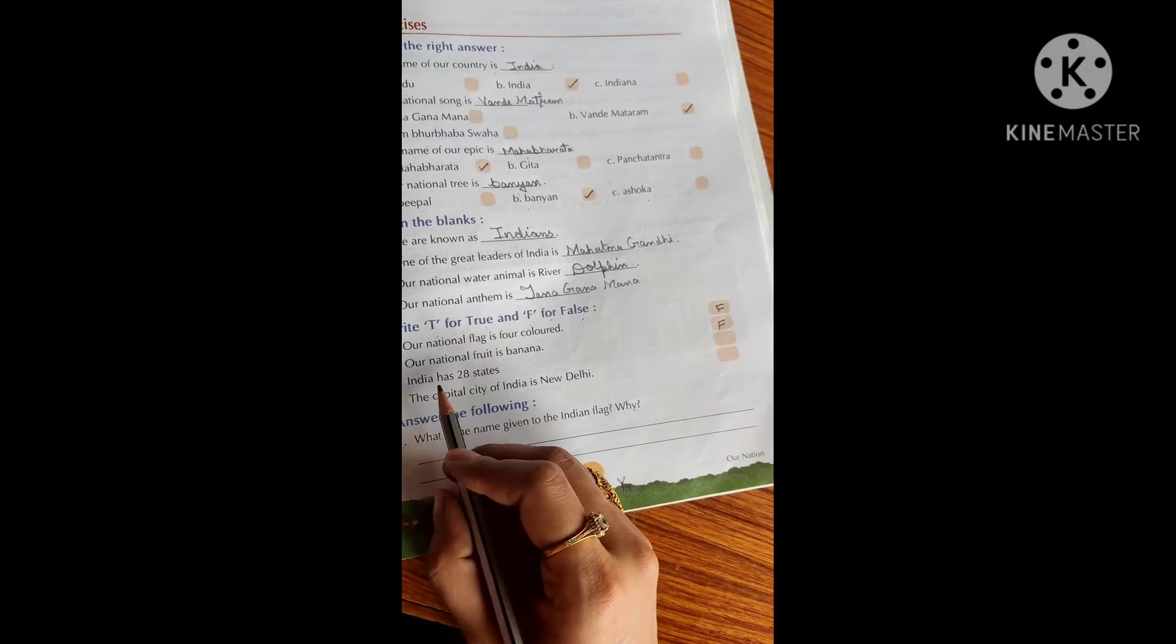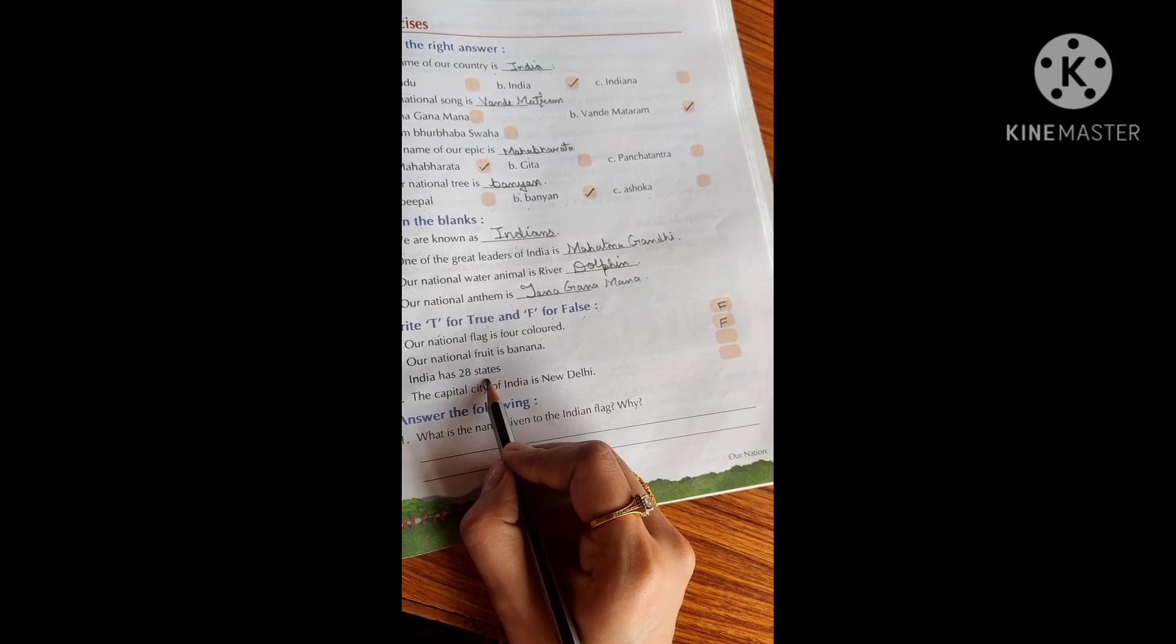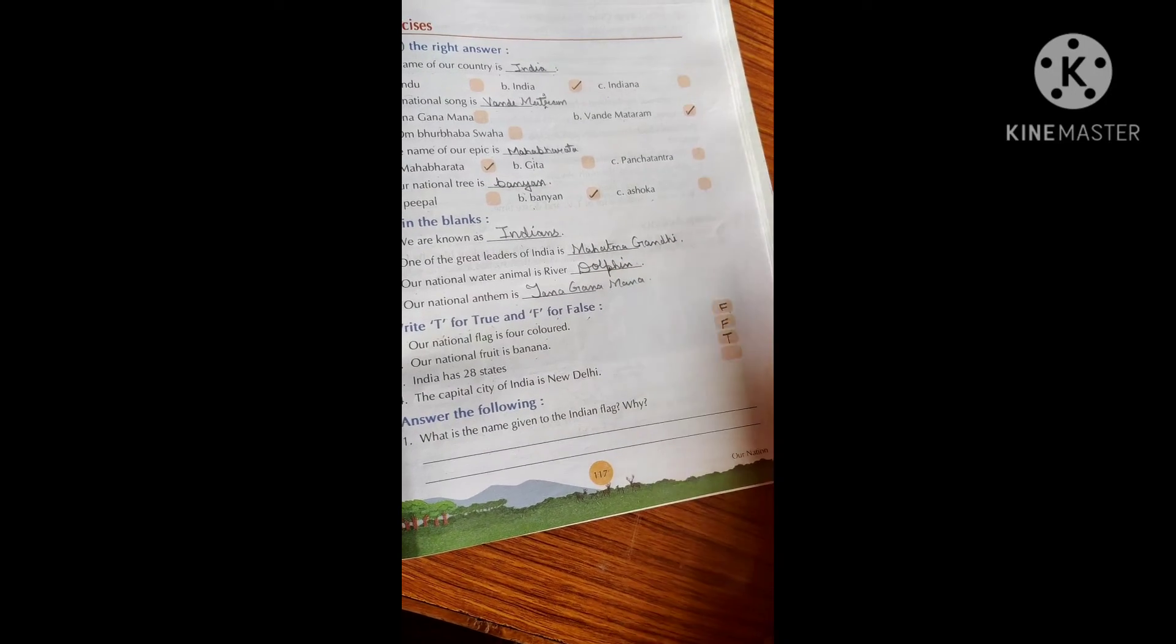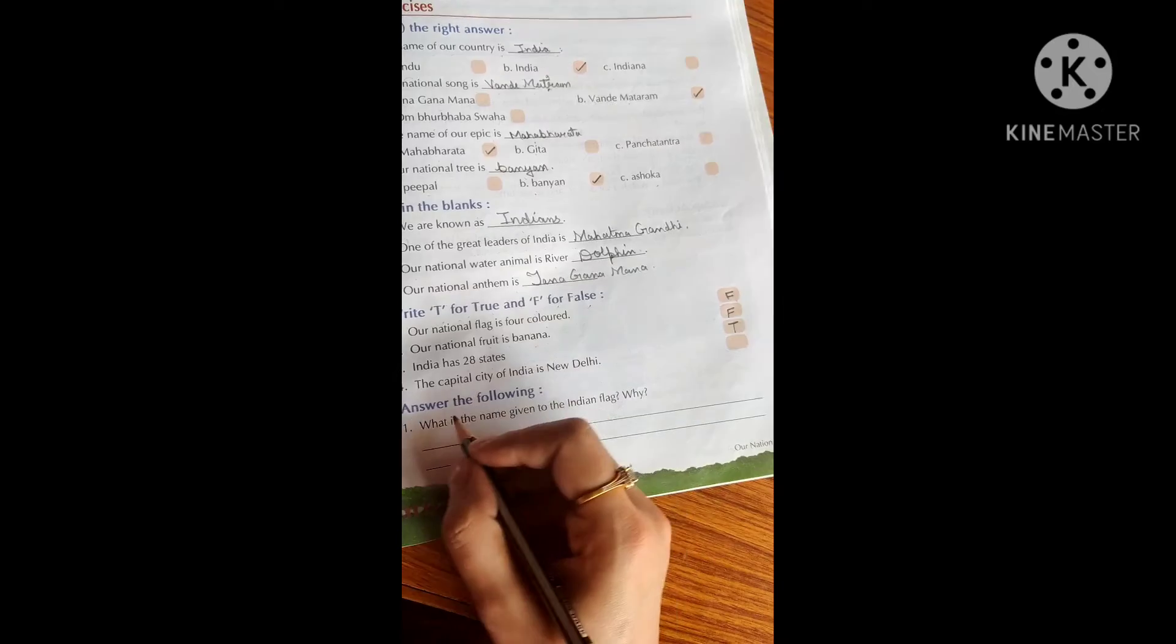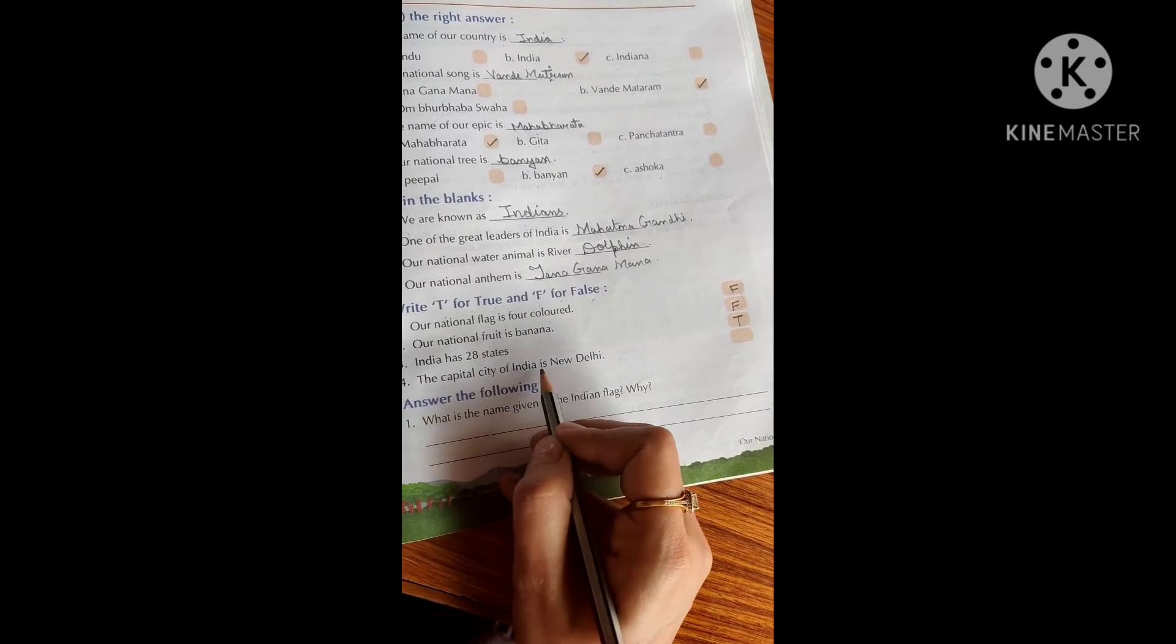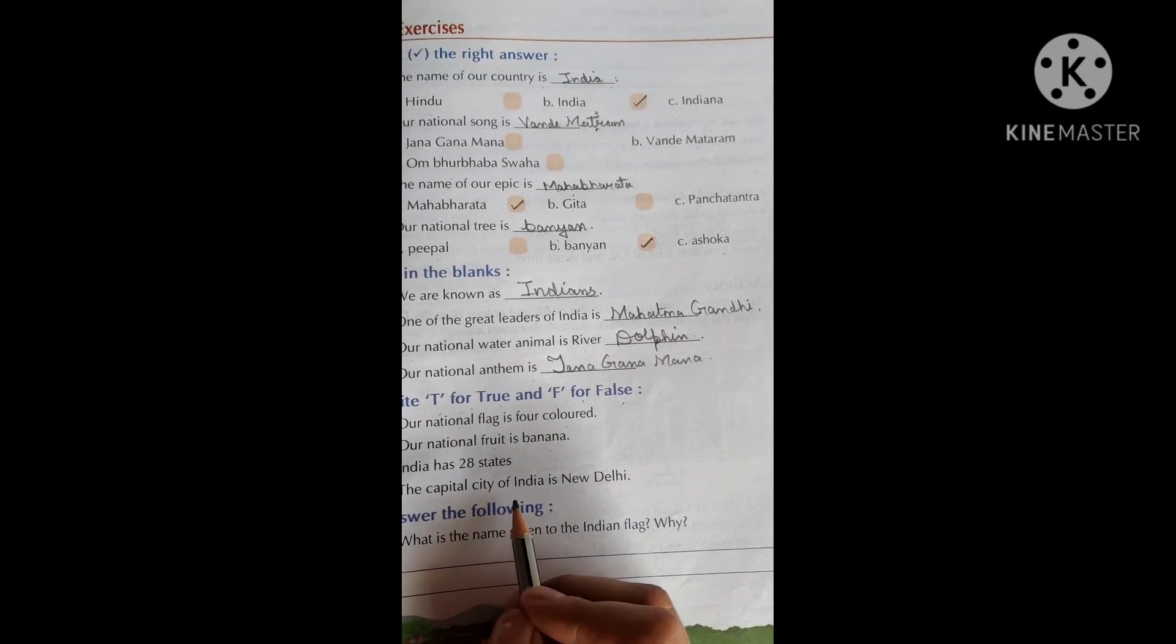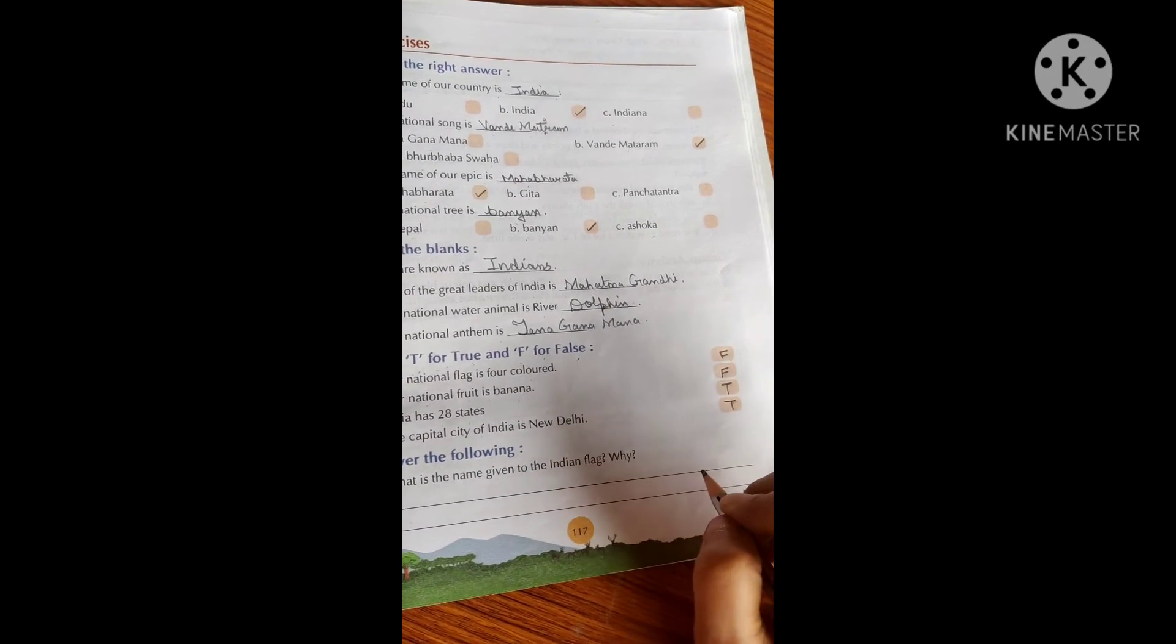The next one is India has 28 states. So does our country have 28 states? Yes. So this is true. We will write T over here. And last one is the capital city of India is New Delhi. Is the capital city of India New Delhi? Yes, it is. So we will write T here because it's true.